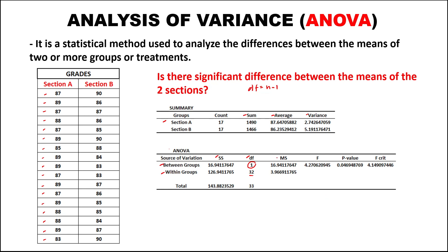For the mean of square, we divide the sum of squares by the degrees of freedom. We also have the F statistic and the F critical value from the F table.